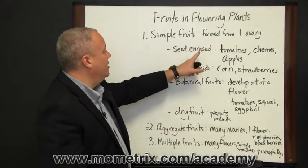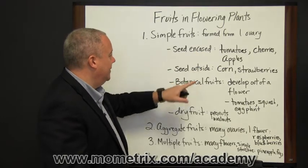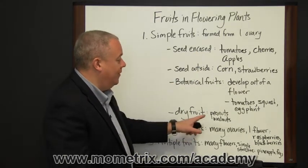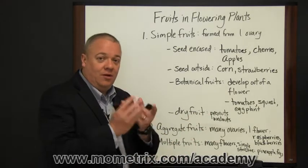So, under simple fruits, one ovary, you have the seed encased, the seed on the outside, botanical fruits developing out of a flower, and dry fruits where the outer wall of the ovary hardens.